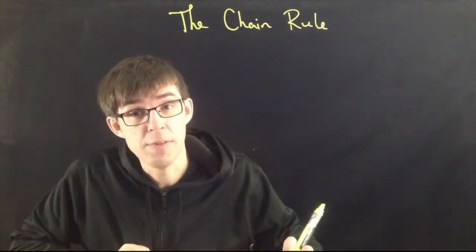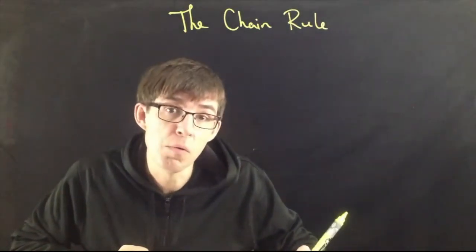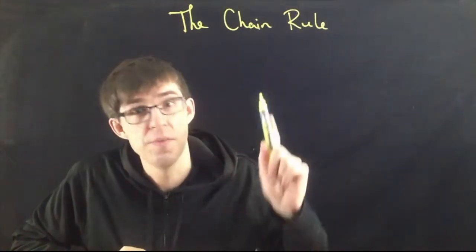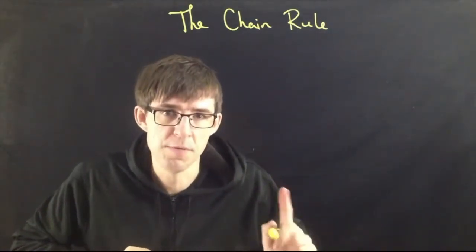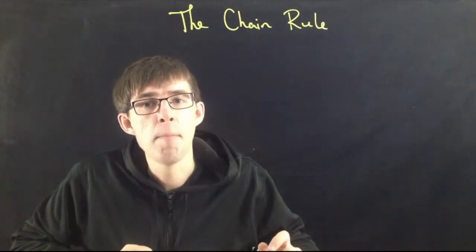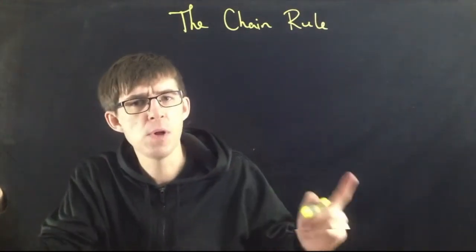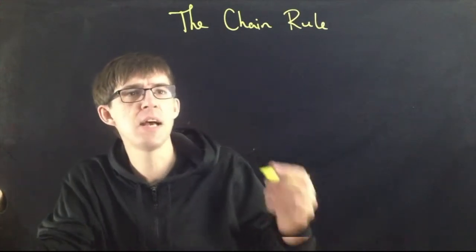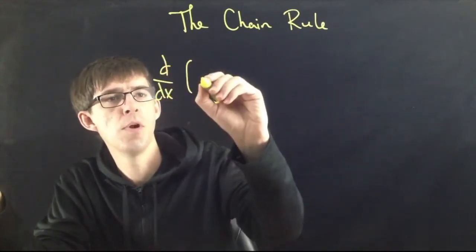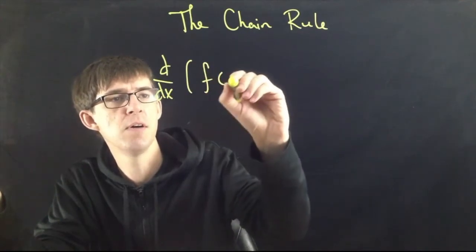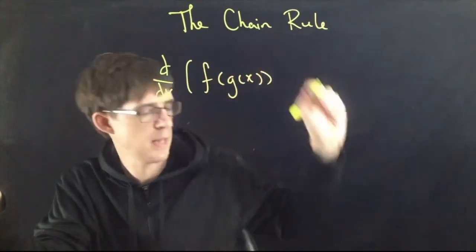Last time we talked about the product rule and the quotient rule. There are three big important rules of this type, and the third one is called the chain rule. This is what you do when you have functions which are plugged inside of one another — not multiplied together, but one function inside of another function. So the chain rule is a formula for the derivative of something like that.